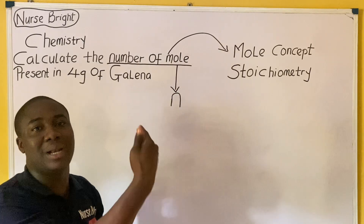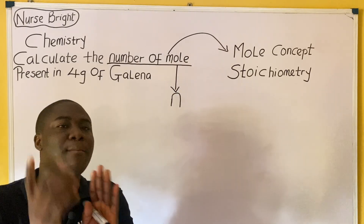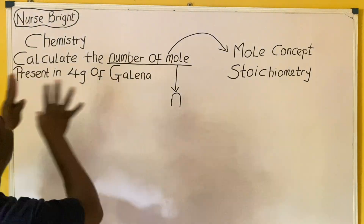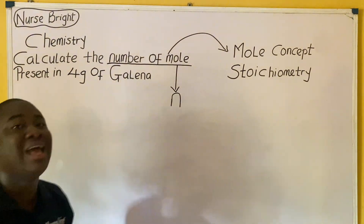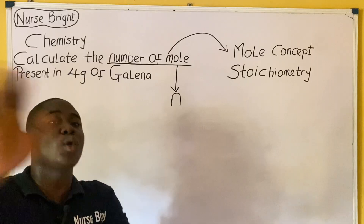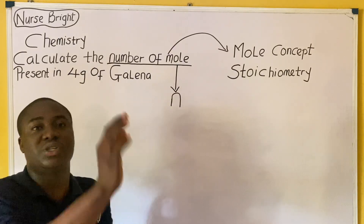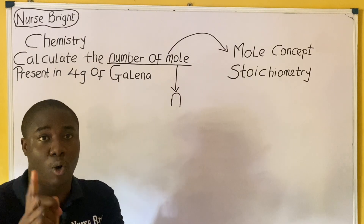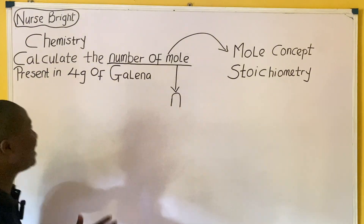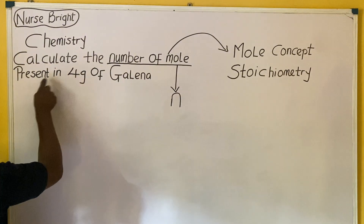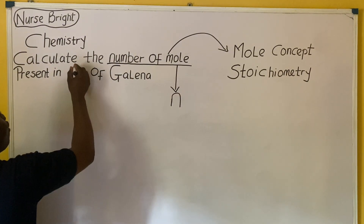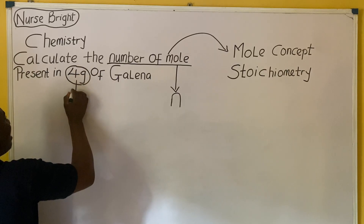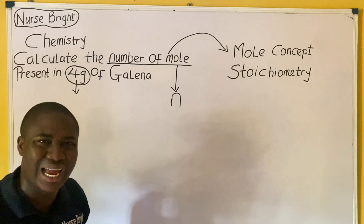I will tell you the formula to use to solve this question based on what I am seeing. That is why stoichiometry is extremely very easy — not hard at all. Let's read the question again: calculate the number of moles present in four grams. Me seeing four grams — anything that is expressed in grams in science means mass.